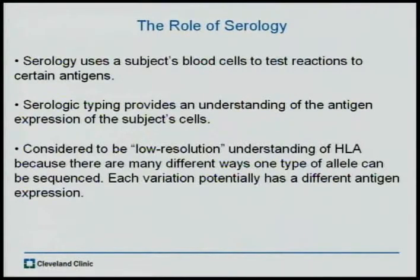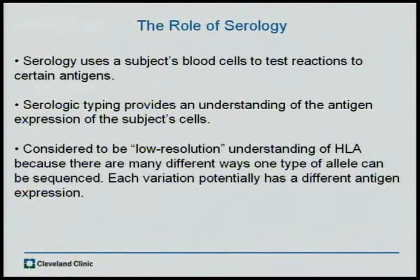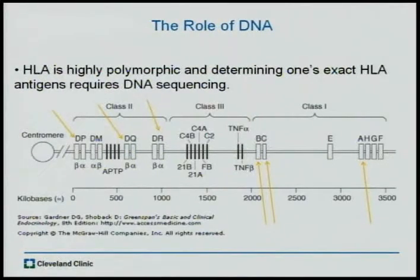Within the whole concept of immunology in transplant medicine, there's something known as serology, and that uses the subject's blood cells to test for reactions to certain reagents to classify the antigens that are on the cells. Serological typing provides this understanding and is considered low resolution of the HLA because something such as A02 could really be several different proteins. Within the actual DNA of the HLA, that's where we get the very specific allele level that we need.